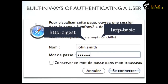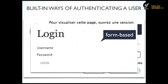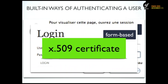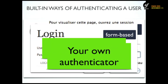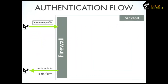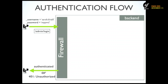You have some built-in ways to authenticate your user — maybe you know them: HTTP digest, HTTP basic, form-based, and X.509 certificates. And you can implement your own. In the big schema, the firewall listens to events. Let's say the user types /admin/my-profile. Since it begins with /admin, as you saw in the configuration, the user is redirected to the login form and has to give some credentials to begin the authentication flow.